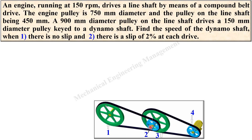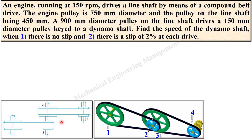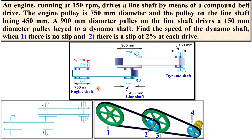Here on this shaft there are two pulleys — that is why it is called a compound belt drive. An engine running at 150 rpm drives a line shaft by means of a compound belt drive. Here this is actually the driving shaft having 150 rpm. You can see pulley number 2 and pulley number 3 are both keyed on the same shaft — that is why it is called a compound belt drive. This is the engine shaft which is the driver, this is the dynamo shaft which is the driven shaft, and this is the intermediate shaft called the line shaft.